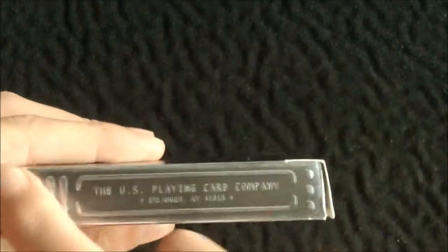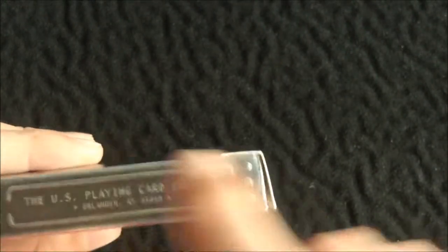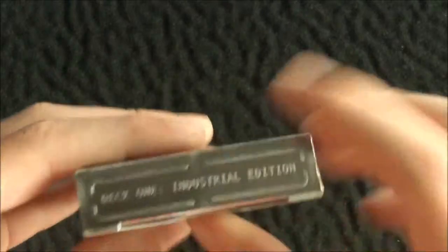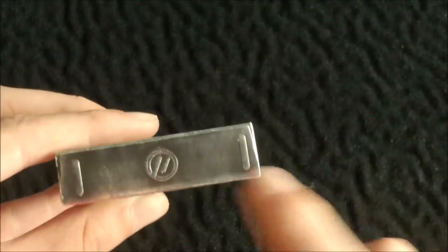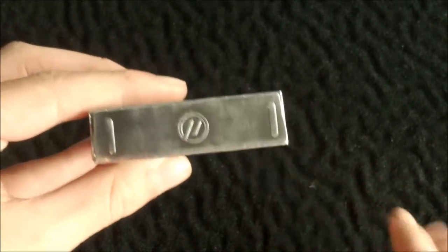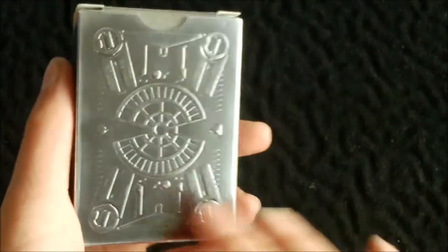On the outside same outer design, and then it says United States Playing Card Company, still embossed. On the top it says Deck One Industrial Edition, and on the bottom it just has the 311 logo with these two lines across here, also embossed. Then on the back you have the back design.